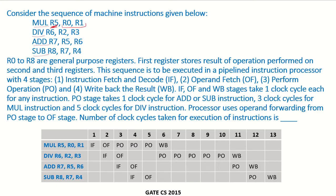This sequence is to be executed in a pipelined instruction processor with four stages: instruction fetch and decode, operand fetch, perform operation, and write back the result. The IF, OF, and WB stages take one clock cycle each for any instruction. The perform operation stage takes one clock cycle for add or sub, three clock cycles for mul, and five clock cycles for div. The processor uses operand forwarding from the perform operation stage to the operand fetch stage.